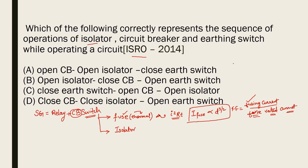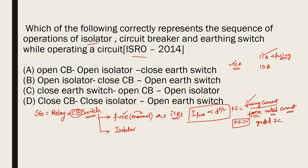For example, a fuse rated at 10 amperes will happily carry up to 10 amperes without any problem. If the current goes beyond 10 amperes — say 11 amperes — that is its fusing current, and it will melt. An important concept is that the fusing factor is always greater than 1. For a good-quality fuse, the fusing factor should be close to 1; if the fuse quality is poor, the fusing factor will be much greater than 1.